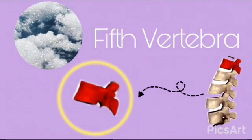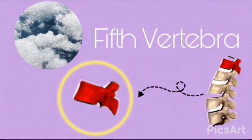Fifth lumbar vertebra: it presents its particularity in the joint with the sacrum. This point, known as the promontory, presents a more open angle, and is very important to measure the corresponding angle of inclination. It can be recognized from a sagittal plane because its anterior height is greater than the posterior height — that is, the anterior length of the body is greater than the length of the posterior arch. This feature is called coining.